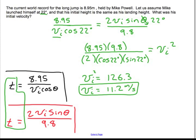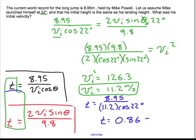This problem doesn't specifically ask for it. But if you're curious, what was Mike Powell's hang time during this? It was a pretty shallow launch. So it's not going to be a huge number. But I will just plug in my info into that equation. I have 8.95 divided by 11.2 times cosine 22. And we actually find that the hang time is 0.86 seconds.